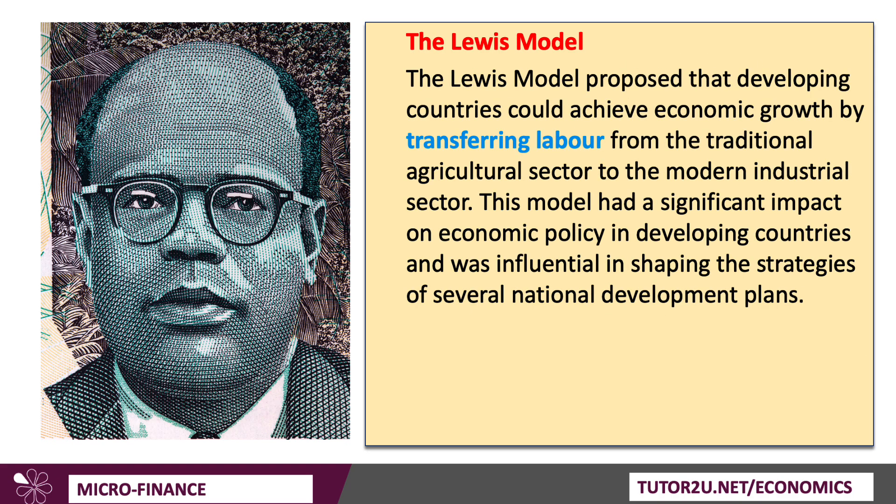The Lewis model proposed that developing countries — countries emerging from low to middle income — could achieve faster economic growth by transferring workers through internal migration from the traditional farm sector of the economy to a more modern, scaled industrial sector. This labour transfer is pivotal to the Lewis model, and the idea had a significant impact on economic policy in developing countries, particularly shaping the strategies of several national development plans, notably countries that are looking to rapidly industrialise and urbanise at the same time.